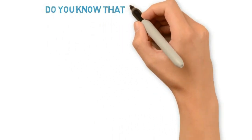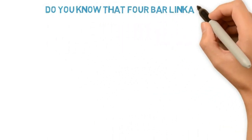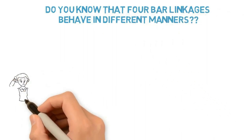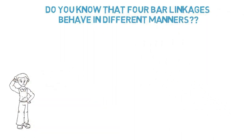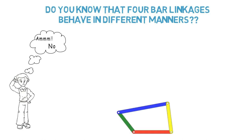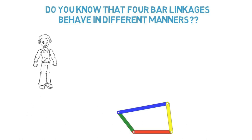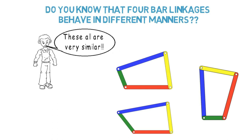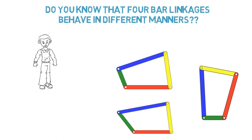Do you know that four-bar linkages behave in different manners? Look at these four-bar linkages. What information can you infer from these linkages? These all are very similar. But they behave differently.